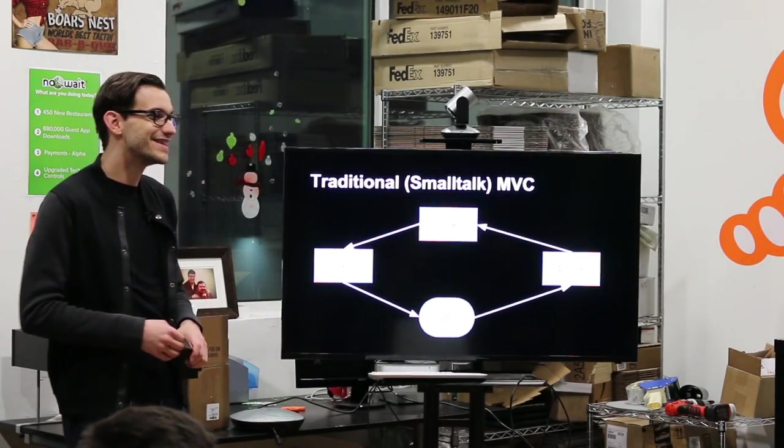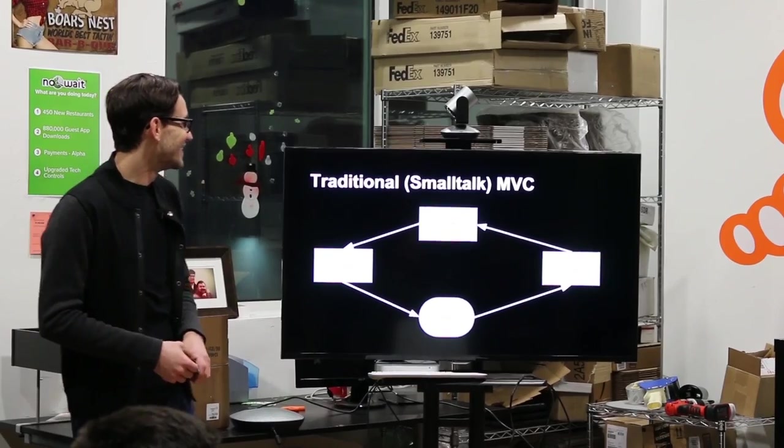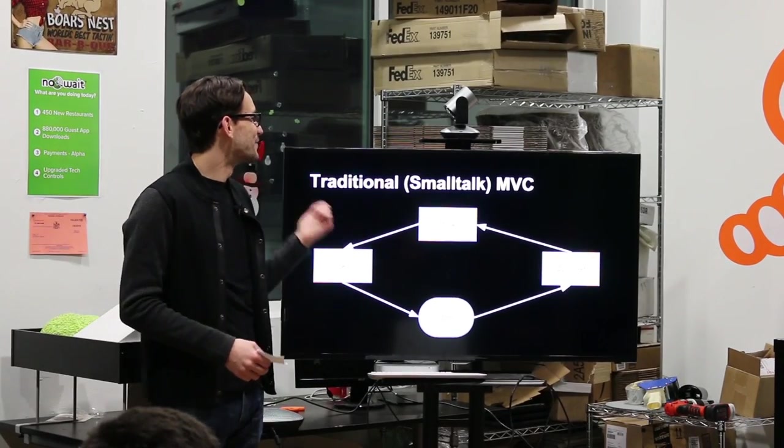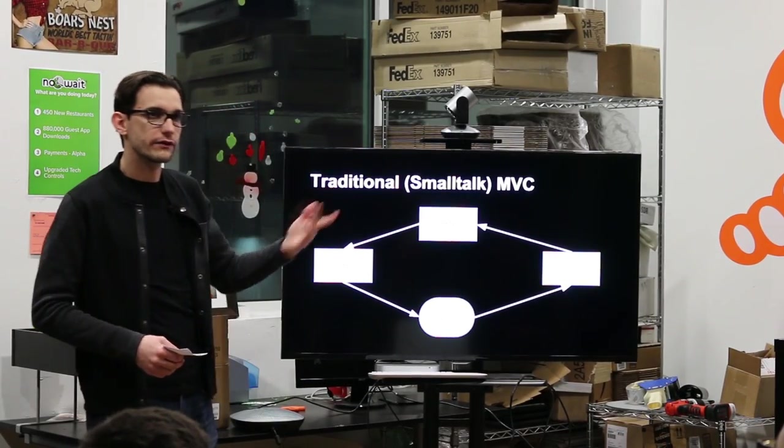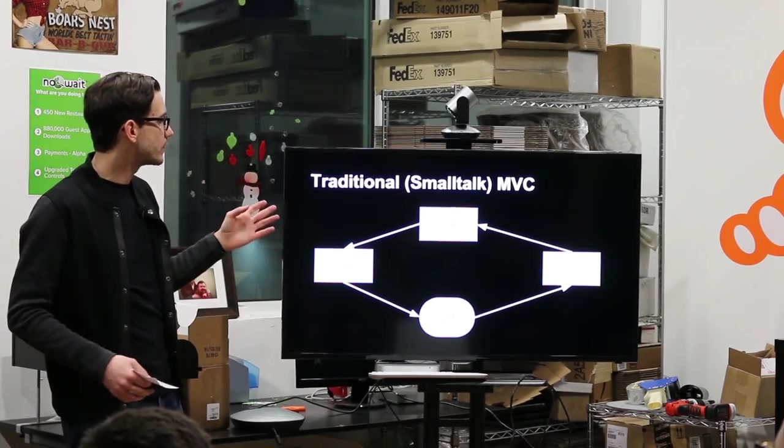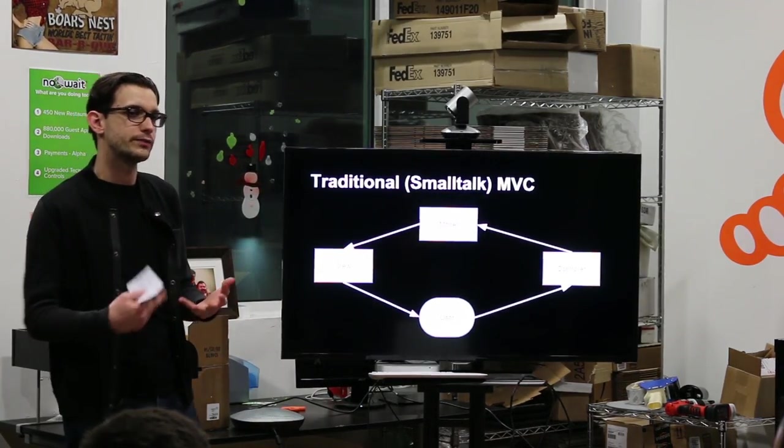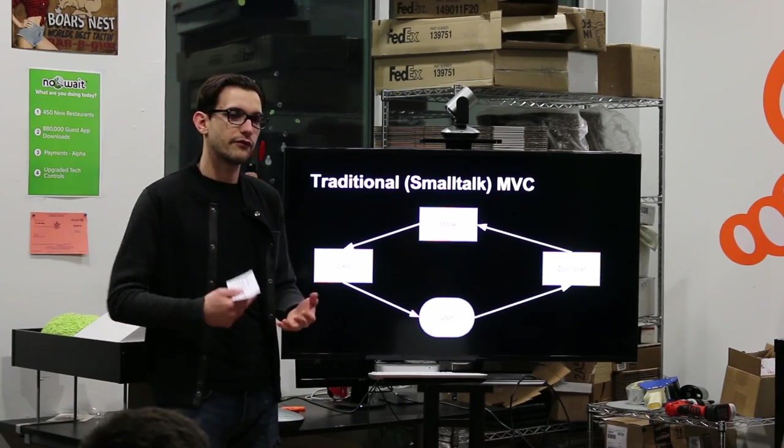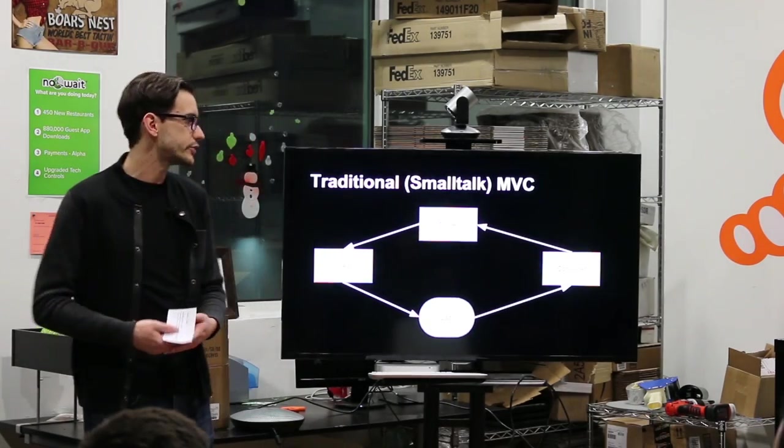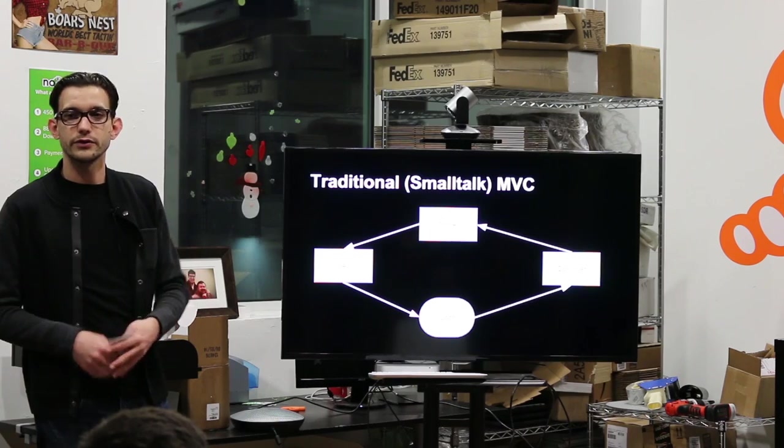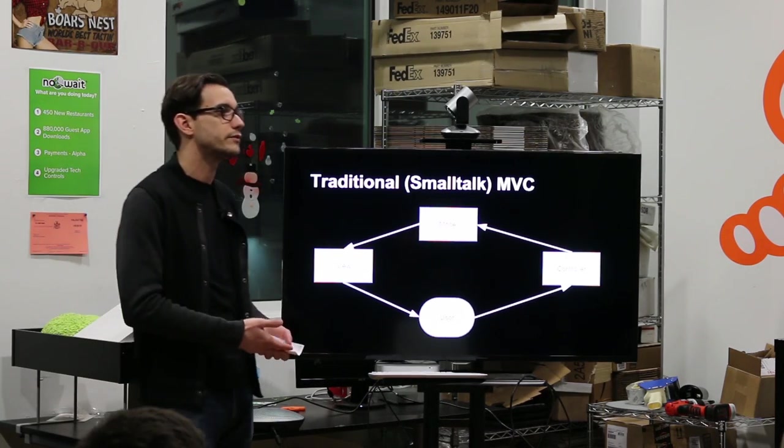Usually, we use, if you look at the small talk version of MVC, it looks very one-directional. You have your model, which populates your view. And then, you have a user that creates a user interaction. And then, that tells the controller to do something on the model. And then, the model updates the view.